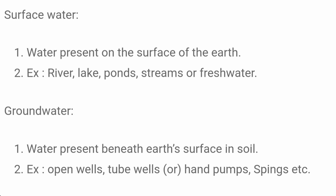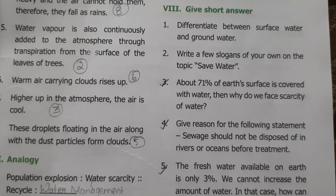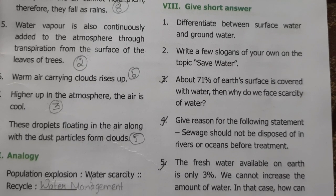Differentiate between surface water and groundwater. Surface water: water present on the surface of the earth — examples: rivers, lakes, ponds, streams. Groundwater: water present beneath the earth's surface in soil — examples: open wells, tube wells, hand pumps, springs.